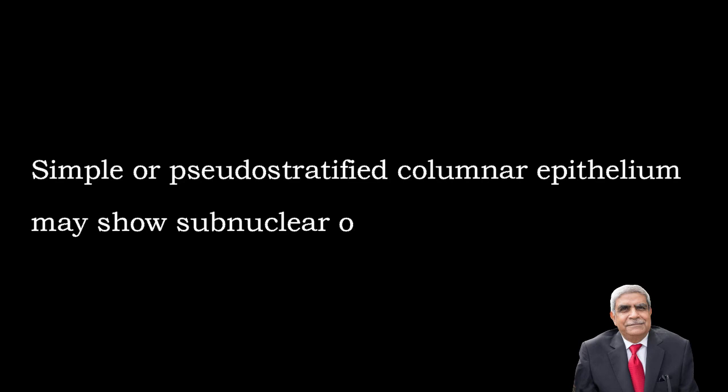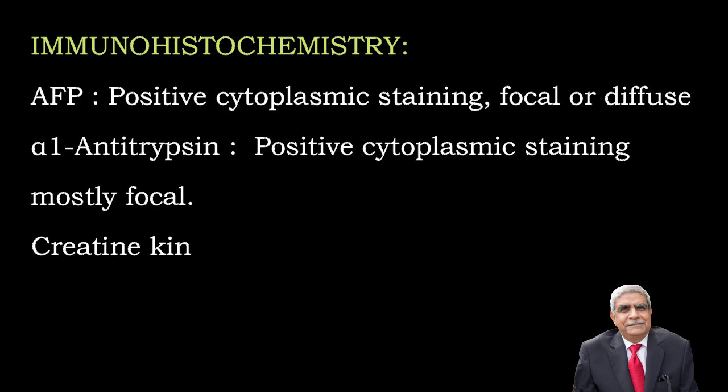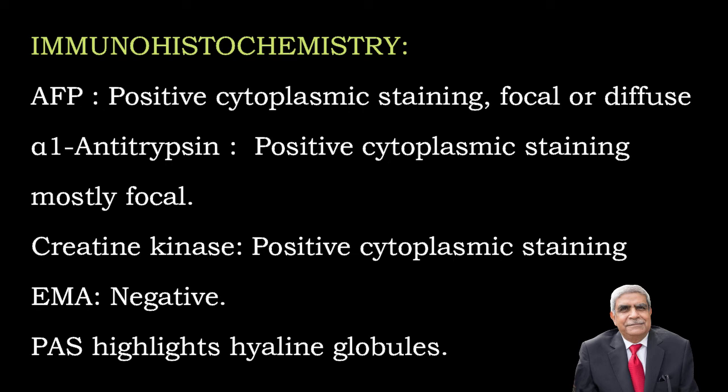There is presence of simple or pseudo-stratified columnar epithelium showing supranuclear or subnuclear vacuoles. Immunohistochemistry: AFP or alpha-fetoprotein shows positive cytoplasmic staining which may be focal or diffuse. Alpha-1-antitrypsin shows positive cytoplasmic staining which is mostly focal. Cytokeratin shows positive cytoplasmic staining.